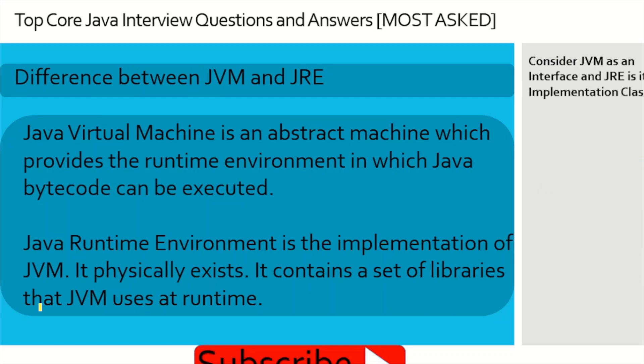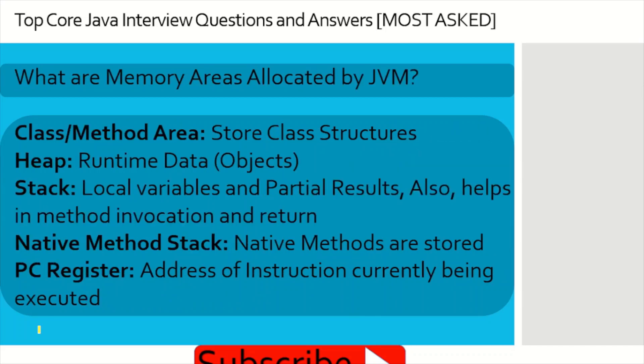The next question is the difference between JVM and JRE. JVM stands for Java Virtual Machine — it is an abstract machine that provides a runtime environment to run bytecode. JRE, the Java Runtime Environment, is the actual implementation of JVM. JVM does not physically exist; JRE does. Think of JVM as an interface where methods are declared but not implemented, and JRE as the class that implements those methods.